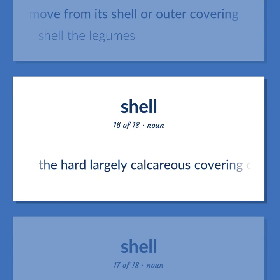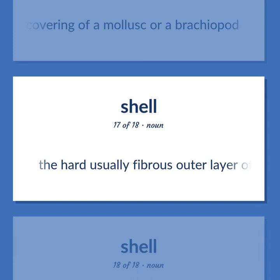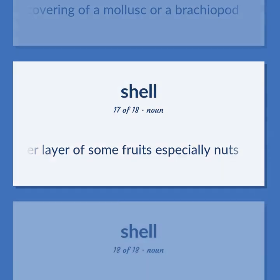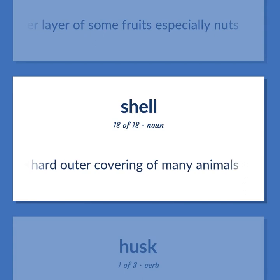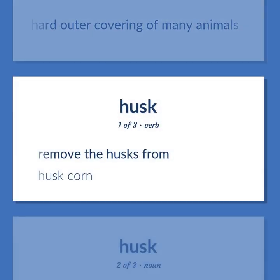The hard largely calcareous covering of a mollusk or a brachiopod. The hard usually fibrous outer layer of some fruits, especially nuts. The material that forms the hard outer covering of many animals. Remove the husks from. Husk corn.